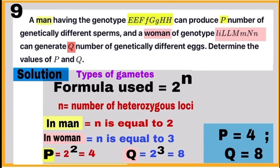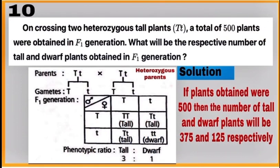Question 10 is based on monohybrid cross. The ratio obtained is 3 tall and 1 dwarf, meaning 3:1 ratio is obtained when two heterozygous tall plants are crossed together. So tall plants will be 375 and dwarf plants will be 125 out of 500 plants obtained.